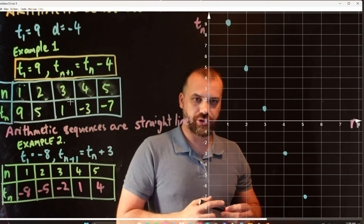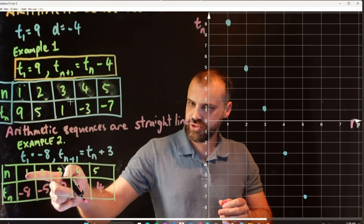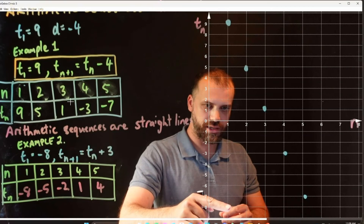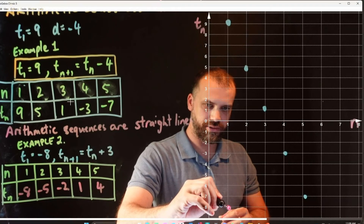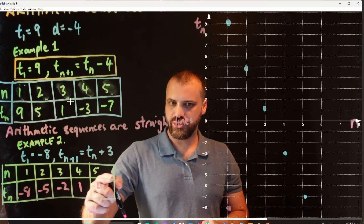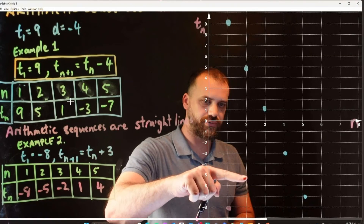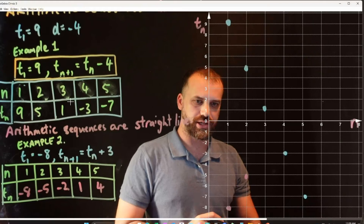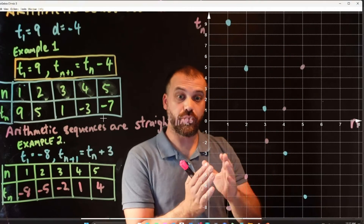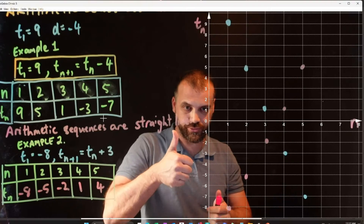Let's graph that. Be careful — don't start at 0 because our first term is n=1. So (1, negative 8) — right there. Next point: (2, negative 5) — 2 across, negative 5 there. Let me do the rest. They're all in a straight line, so I probably haven't made a mistake there.